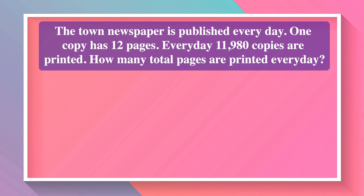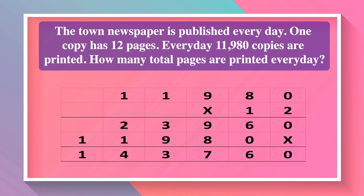The town newspaper is published every day. One copy has 12 pages. Every day 11,980 copies are printed. How many total pages are printed every day? Each copy has 12 pages, so 11,980 copies will have 12 × 11,980 pages. When we multiply 11,980 by 12, we get 1,43,760.